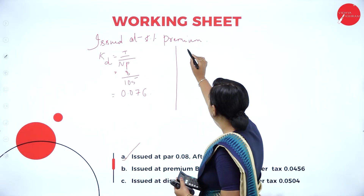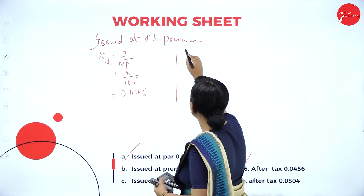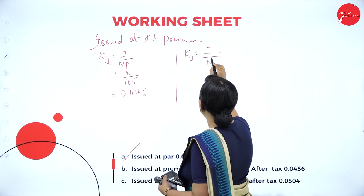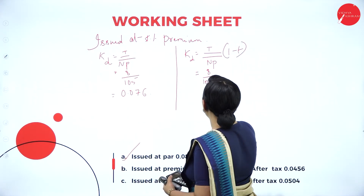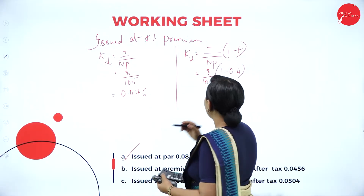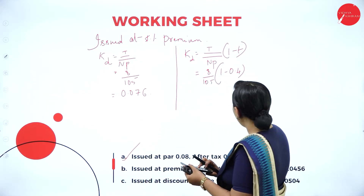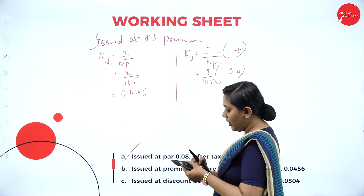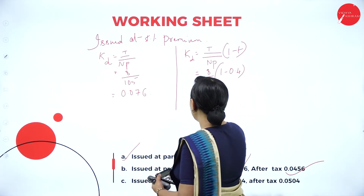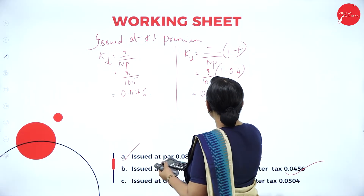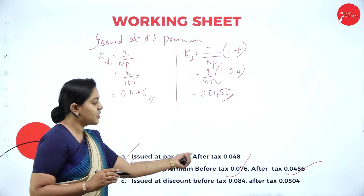Next, we calculate after tax for issued at a premium. The formula adds the tax adjustment: cost of debt equals interest divided by net proceeds, multiplied by (1 minus tax rate). Interest is 8, net proceeds is 105, and tax rate is 0.4. Substituting: 1 minus 0.4 equals 0.6; 8 divided by 105 into 0.6 gives 0.0456. That is the after tax cost of debt issued at a premium.